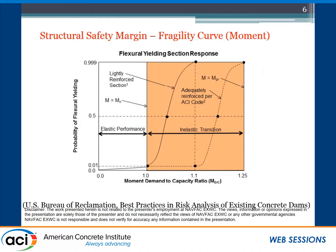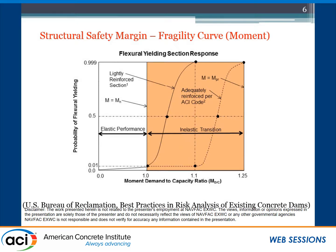This is a fragility curve relating the D/C ratio to probability of failure. For bending moment failure, if D/C is 10% over capacity, there likely won't be yielding yet. If it's 25% over, probability of failure approaches 100% per year. For shear failure mode, if D/C goes to 1.1, there's about a 50% chance of failure; at 1.2, about 90% chance. This has been used by the U.S. Bureau of Reclamation in their best practice for risk analysis of existing concrete dams. This is a good approach to develop fragility curves when assessing structural safety.